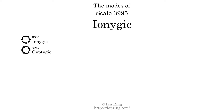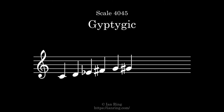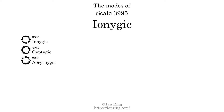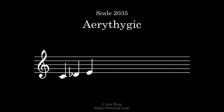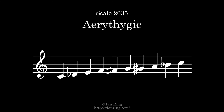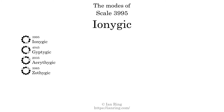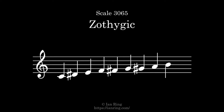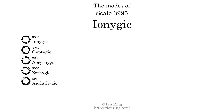The second mode sounds like this. The third mode is scale 2035, also known as Erythagic. It sounds like this. The 4th mode is scale 3065, also known as Elethargic. It sounds like this. The 5th mode is scale 895, also known as Elethargic. It sounds like this.